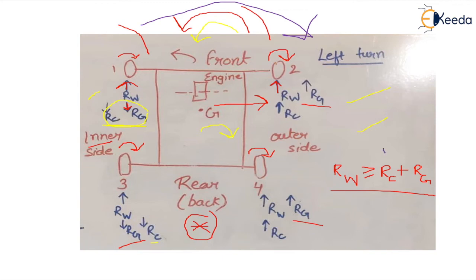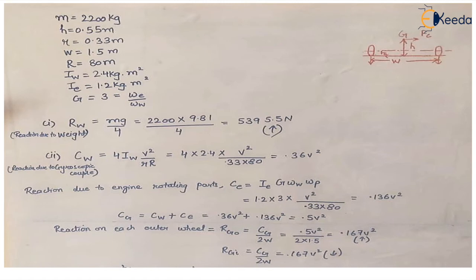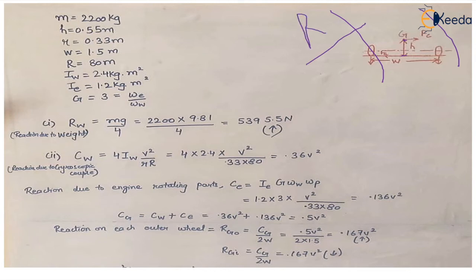Now we list all given data: mass of the vehicle m, height of centroid from ground h, radius of wheel rw, track width 1.5 meter, radius of curvature R, moment of inertia of wheels IW, moment of inertia of engine rotating parts I, and gear ratio. The gear ratio equals angular velocity of engine rotating parts divided by angular velocity of wheels.